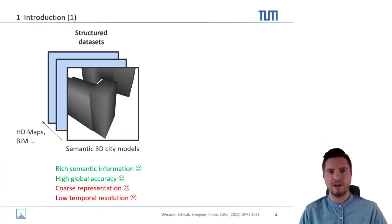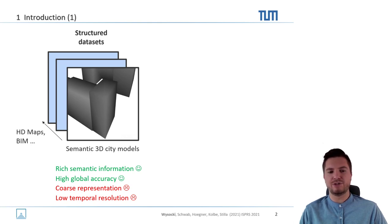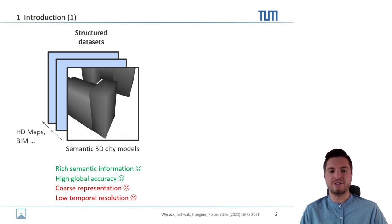Currently we are encountering a structured dataset influx — be it semantic 3D city models, HD maps, or BIM models. Those are characterized by rich semantic information and high global accuracy, but they also have some cons like coarse representation or low temporal resolution.